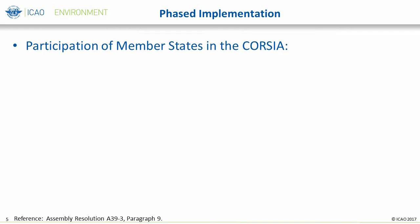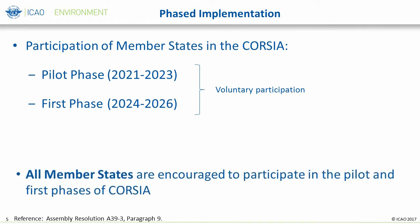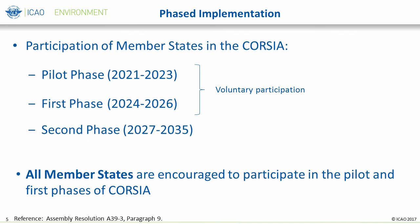You may be wondering how participation in each phase is determined. In the pilot and first phases from 2021 to 2026, state participation is voluntary, and it is up to each state to determine their participation. All member states are encouraged to participate in the pilot and first phases of CORSIA. In the second phase from 2027, paragraph 9 of the resolution determines that all states will participate in CORSIA except the exempted states. These exemptions in the second phase will be discussed in more detail in subsequent slides.